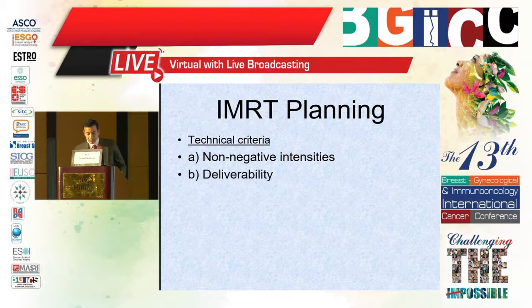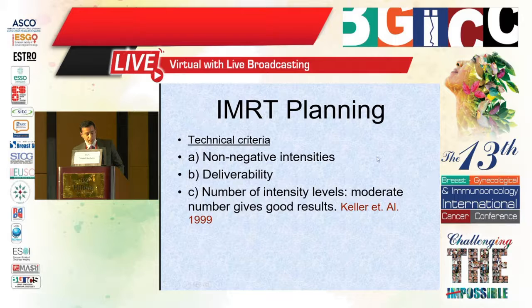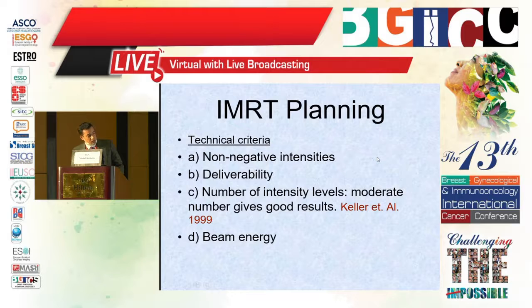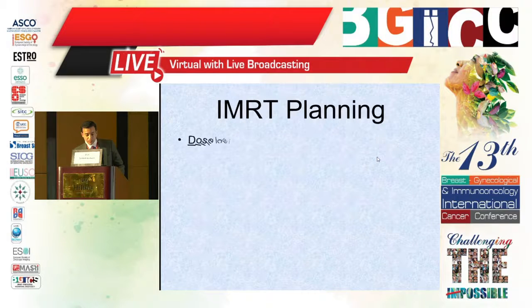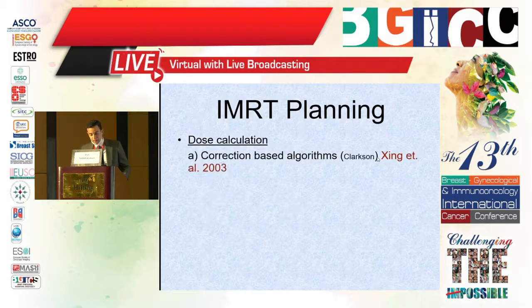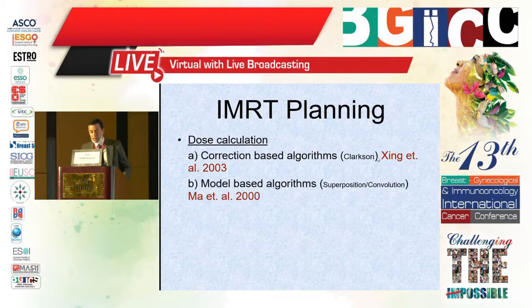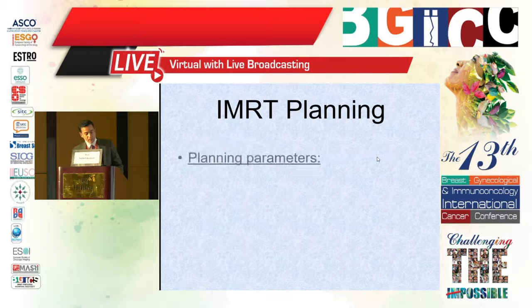Negative intensities and the deliverability and number of intensity levels — a moderate number gives good results. We should use a suitable energy for the required beams. Dose calculation depends on correction-based algorithms like the Clarkson model, model-based algorithms like superposition, and the conventional convolution.